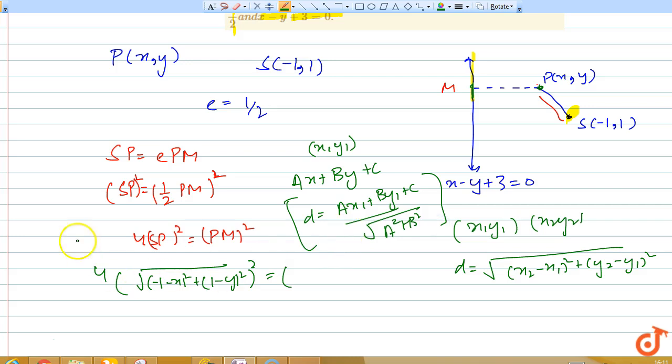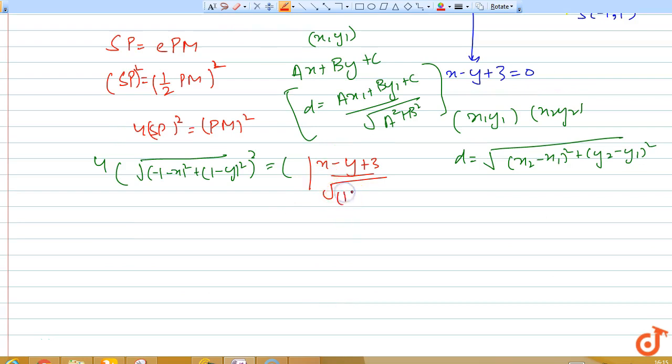We would have |x - y + 3| divided by √(1² + (-1)²), which equals |x - y + 3| / √2.